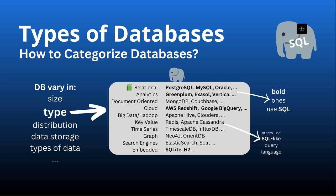We could also typically categorize databases by type, which is the categorization shown here in this gray box in the central area. By type, we can classify them into relational databases, analytics systems, document-oriented databases, cloud databases, and other types of databases.